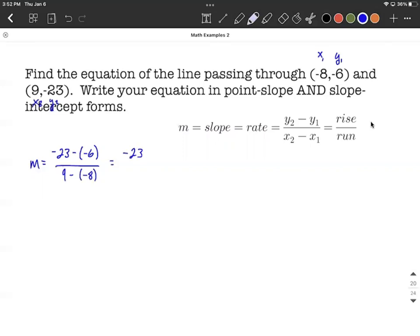Now we can do some simplifying down here. The subtraction of negative is equivalent to adding in both the numerator and the denominator. A little bit more simplifying down here. I think we have negative 17 over positive 17, which will work out to be a negative 1.